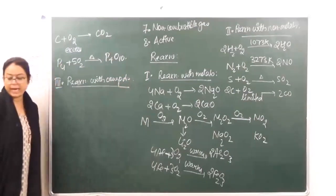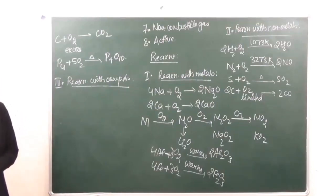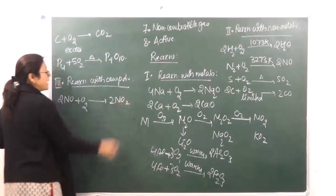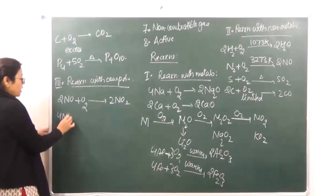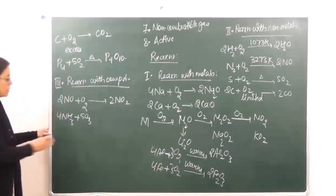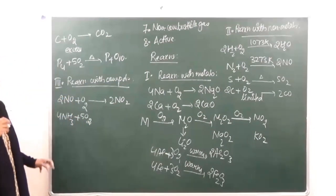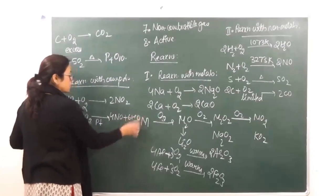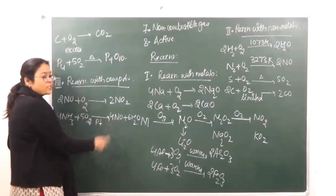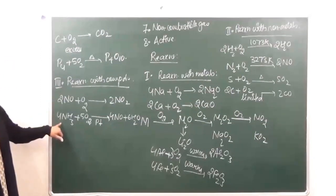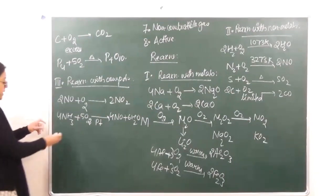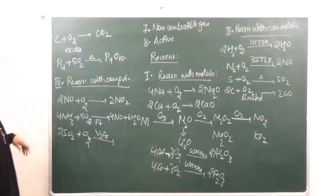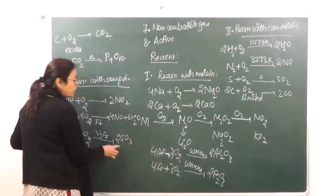It also reacts with compounds. For example, it reacts with nitric oxide: 2NO + O2 → 2NO2. It reacts with ammonia in the presence of platinum as catalyst to give nitric oxide plus water. This is the base reaction for Ostwald's process for the preparation of nitric acid. Similarly, it reacts with sulfur dioxide in the presence of V2O5 (vanadium pentoxide) catalyst to give sulfur trioxide — this is the base reaction of the contact process for preparation of sulfuric acid.